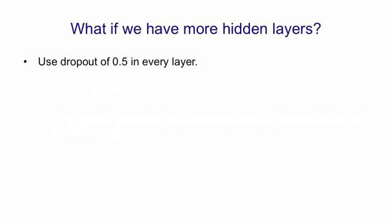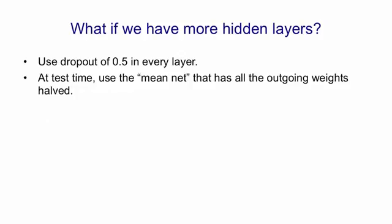If we have more than one hidden layer, we can simply use dropout of 0.5 in every layer. At test time, we halve the outgoing weights of all the hidden units, and that gives us what I call the mean net.